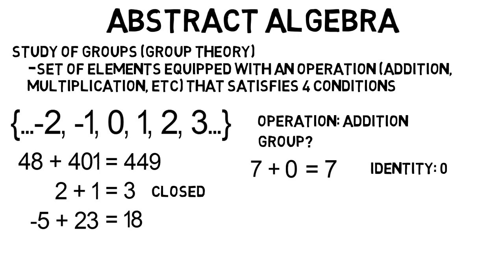Next, for any number in our set, is there another that we can add to it, which gives us our identity element, or zero, from above? And again, yes, it's just the negative of itself in this case, which means every element has an inverse.